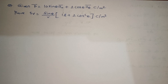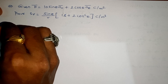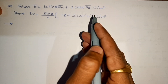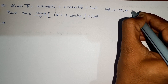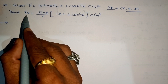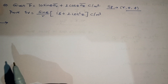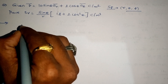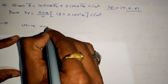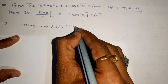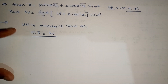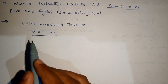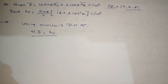Hello everyone. Let us take an example on Maxwell's first equation, or Gauss's Law in point form. The question gives D-bar in terms of r and theta, so it is in the spherical coordinate system. We are asked to prove that rho_v, the volume charge density, equals a given expression. Since D-bar is given and we need rho_v, we will use Maxwell's first equation, where divergence of D-bar equals rho_v.